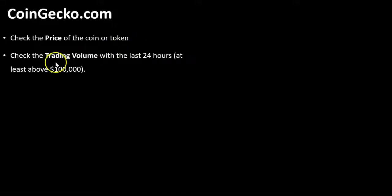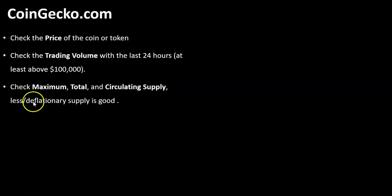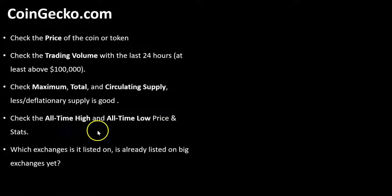Once you're there, the first thing you want to check is the price of the coin or token you are researching. You also want to check the trading volume within the last 24 hours — at minimum it should have at least $100,000 in volume within the last 24 hours. Check the maximum, total, and circulating supply of the token. If it has a low or deflationary supply, that is even better.